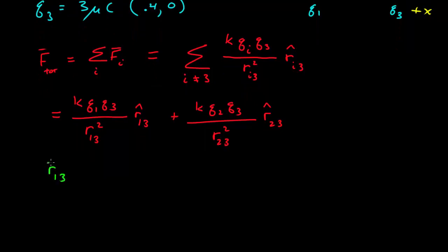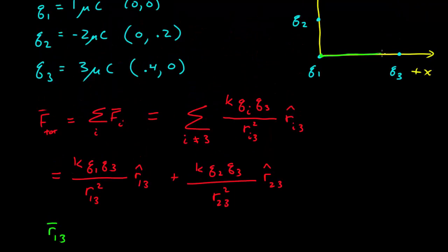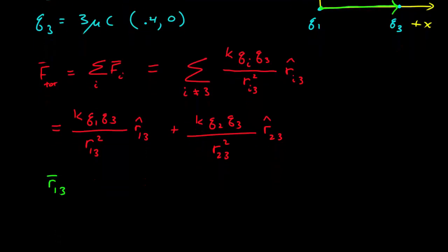r13 is the vector that points from 1 to 3, so that's this vector right here. I know that the distance between 1 and 3 is 0.4 meters, and the vector from 1 to 3 is in the positive x direction, so this vector is 0.4 i hat. From that, the magnitude is just 0.4 meters, and the unit vector from 1 to 3 is just the x unit vector, i hat.